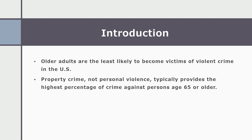Before we define elder abuse, I wanted to bring this to your attention. Statistics and empirical evidence show us that older adults are the least likely to become victims of violent crimes in the United States. Elders are the least likely, and when they do become victims of crime, it's mostly property crime — typically those 65 and older — and we're going to talk about that in just a minute.